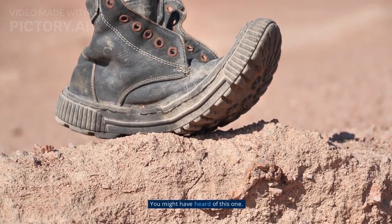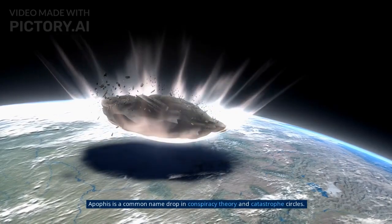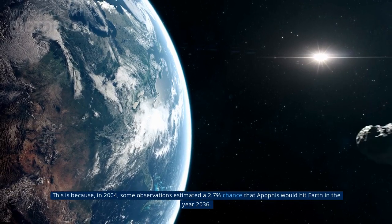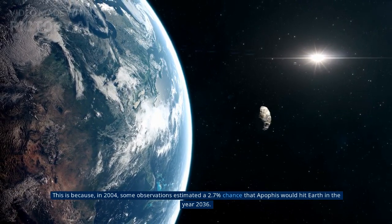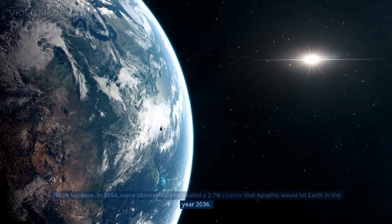Number 4: Apophis. You might have heard of this one. Apophis is a common name drop in conspiracy theory and catastrophe circles. This is because, in 2004, some observations estimated a 2.7% chance that Apophis would hit Earth in the year 2036.